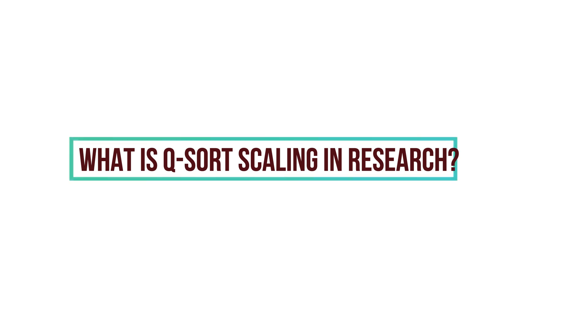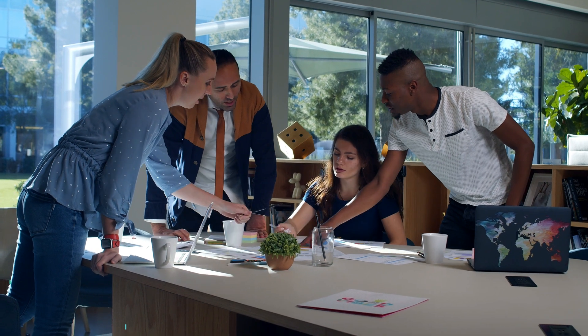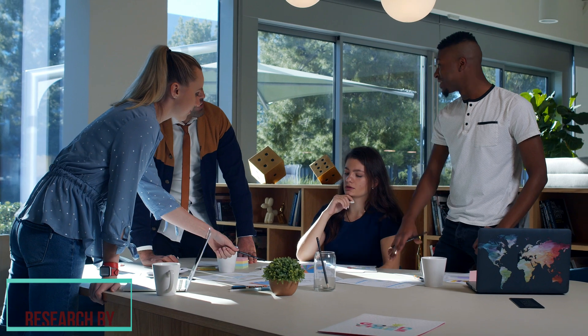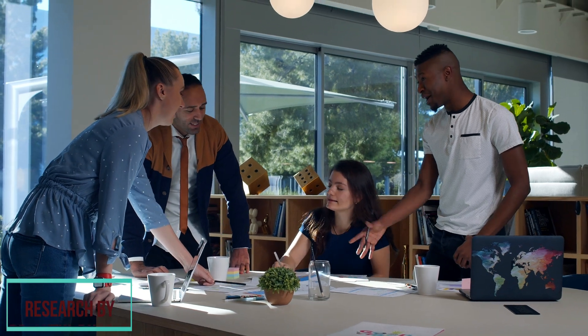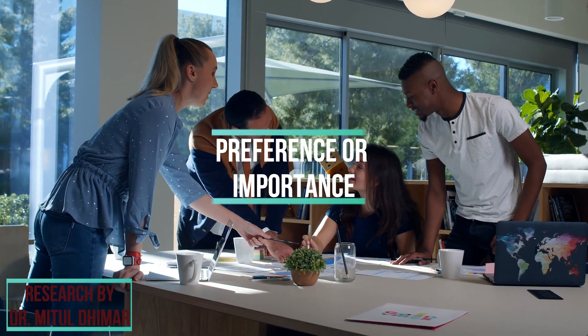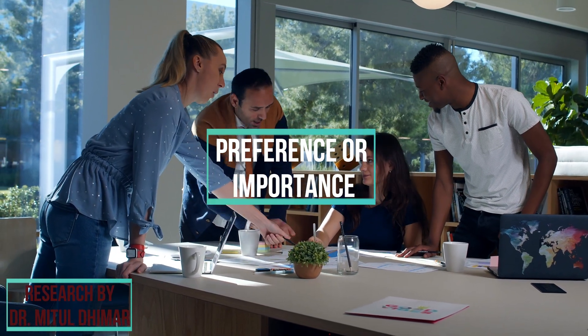Q-Sort Scaling is a research method where participants sort a set of items or statements according to specific criteria, such as preference or importance. It helps researchers understand how individuals perceive and prioritize different items based on their personal judgments and opinions.